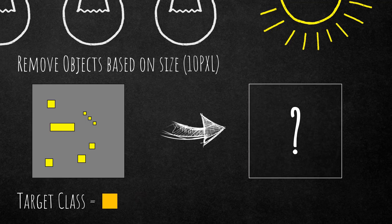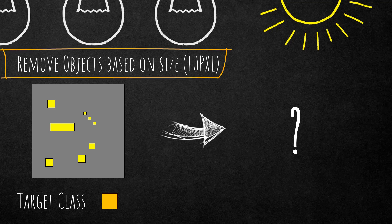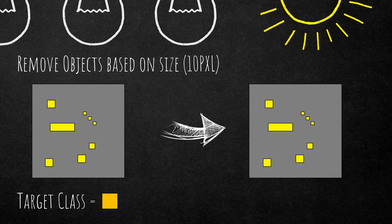Let's look at a few more examples. If we remove image objects based on size — 10 pixels — targeting a specific class, nothing happens, because those yellow image objects are not touching the orange target class and therefore cannot be dissolved into it.